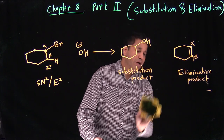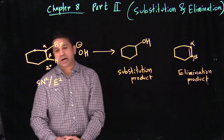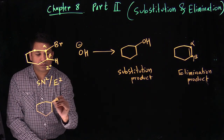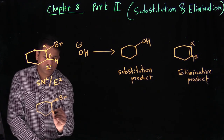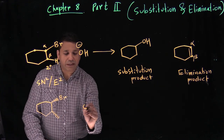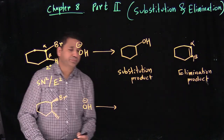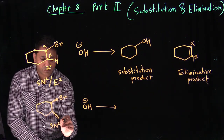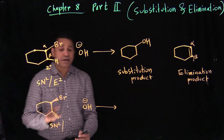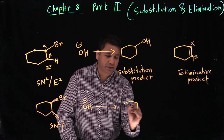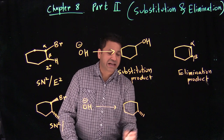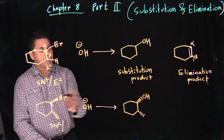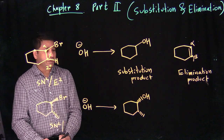So you'll always have two products: a substitution product and an elimination product. Let's do another example where we actually have a stereogenic carbon. We again add OH⁻. This is a secondary carbon with a strong nucleophile, so we do SN2. Since bromine is on the front, the nucleophile attacks from the back side — they have exactly opposite configuration. This is R, so the product should be S.